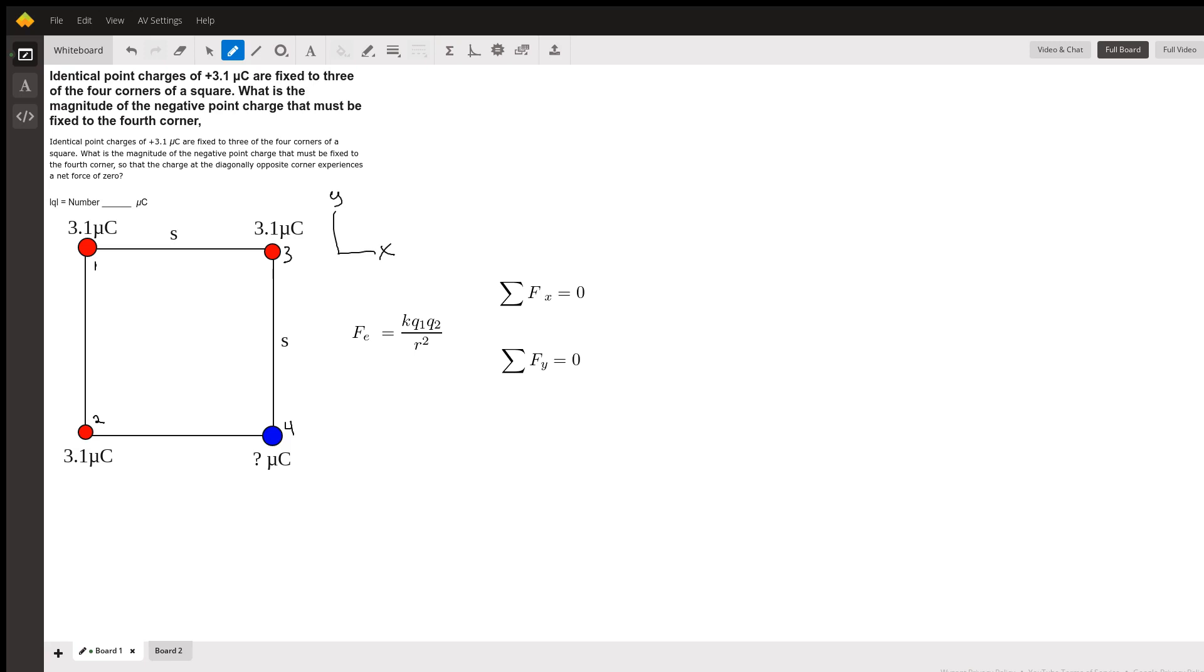So here I've set up the square with side lengths of s, and we have three identical charges—one, two, and three—in the corners with charge of positive 3.1 microcoulombs.